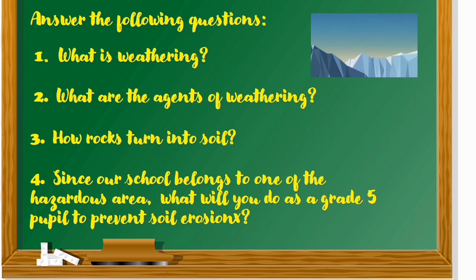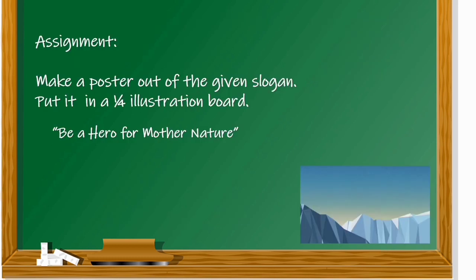To check your learning, answer the following questions. Number 1: What is weathering? Weathering is the breaking down of rocks into smaller pieces. Number 2: What are the agents of weathering? The agents of weathering are water, wind, temperature, plants, animals, and humans. Number 3: How do rocks turn into soil? Rocks turn into soil by the process of weathering. Number 4: Since our school belongs to one of the hazardous areas, what will you do as a Grade 5 pupil to prevent soil erosion? For your assignment, make a poster based on the given slogan. Put it on a one-fourth illustration board. The rubric is given to you as your guide.